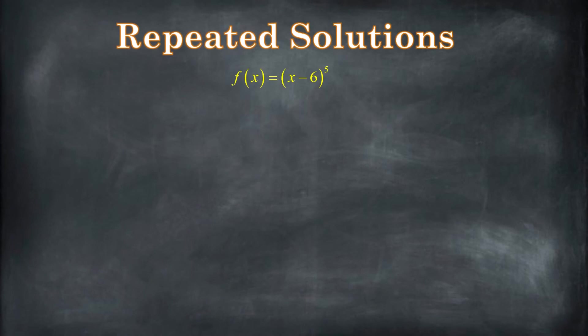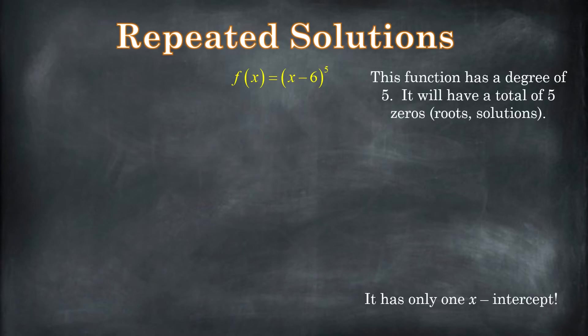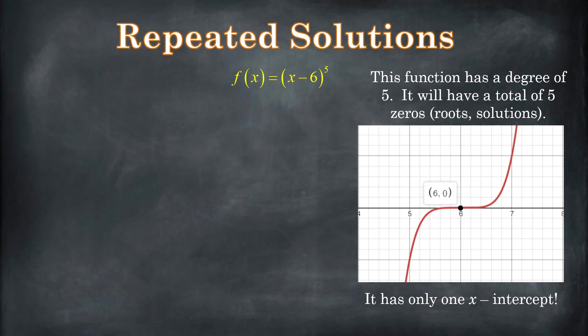Let's talk about repeated solutions. Here we have a polynomial function of degree 5, and it actually only has one x-intercept. A function with a degree of 5 is going to have five solutions, but it only has one x-intercept. This is going to help us understand how we can have repeated solutions — that's multiplicity. This is going to have a solution of x equals 6 with a multiplicity of 5, meaning five identical solutions. On a graph, it looks just like this.